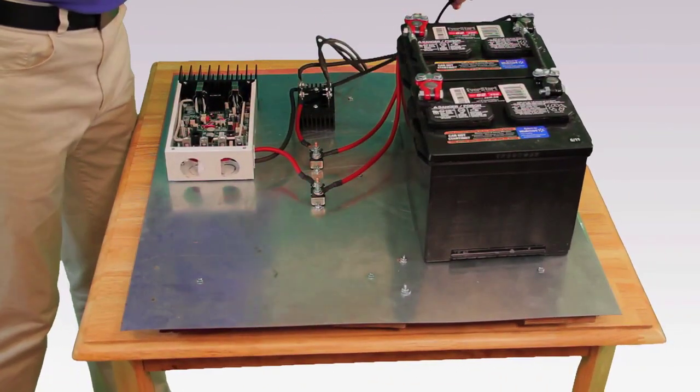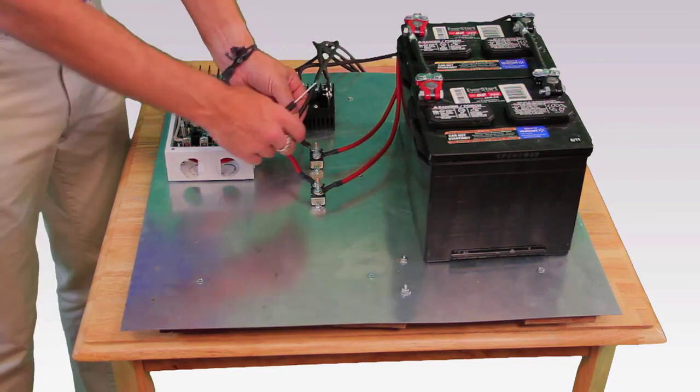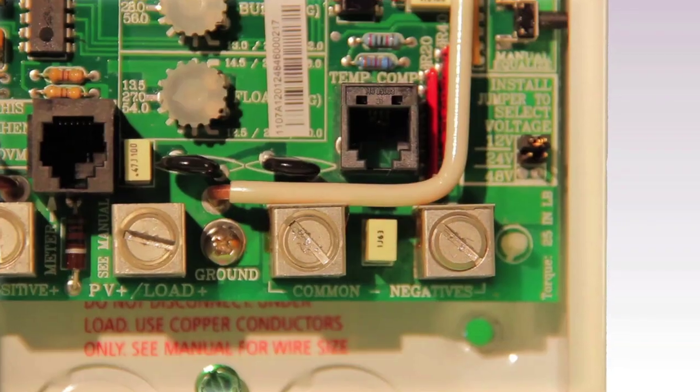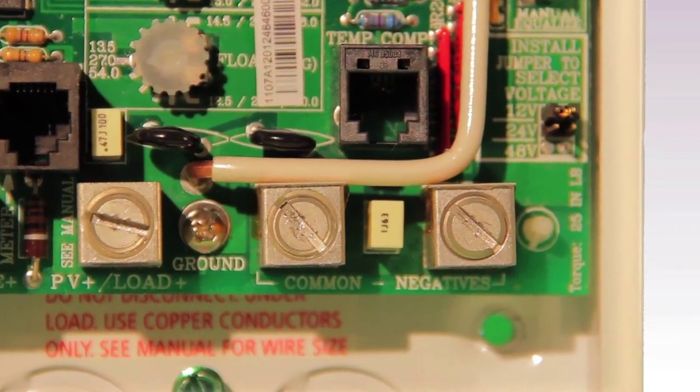Next take a black wire from the batteries negative terminal and connect it to one of the two terminals marked common negative inside the DC controller.